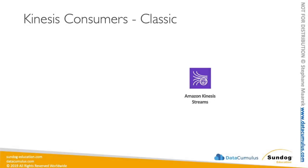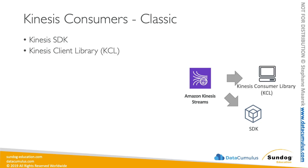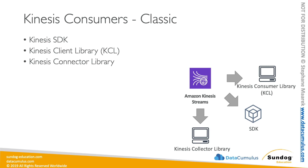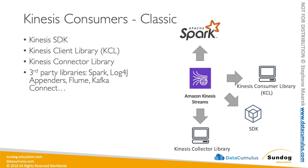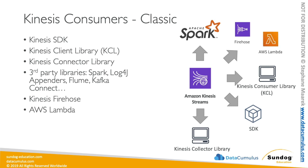Let's talk about how we can consume data from Kinesis Data Streams, starting with the classic consumers. The first is the Kinesis SDK — the same way we use the CLI or a programming language to push data, we can use it to read data too. We can also use the Kinesis Client Library (KCL) — we produce with the KPL and read with the KCL. There's also the Kinesis Connector Library, third-party libraries like Apache Spark, Log4j, Flume, and Kafka Connect — notably, the exam expects you to know Apache Spark can read from Kinesis Data Streams. We can also use Kinesis Data Firehose and AWS Lambda.